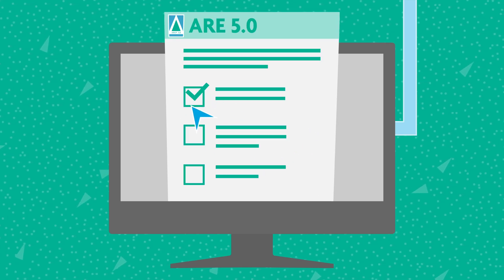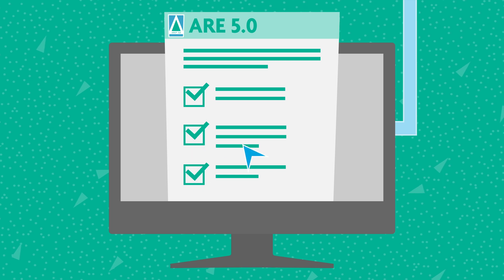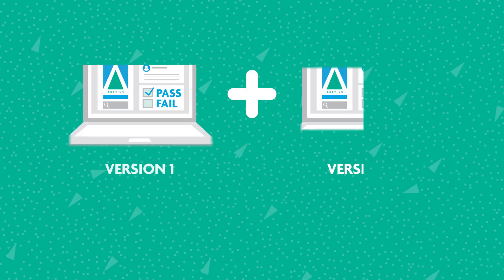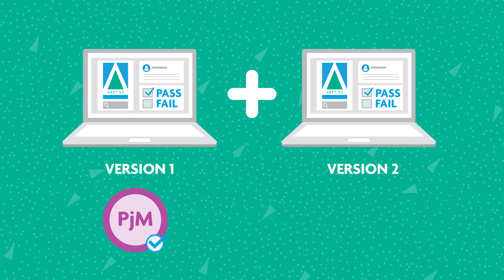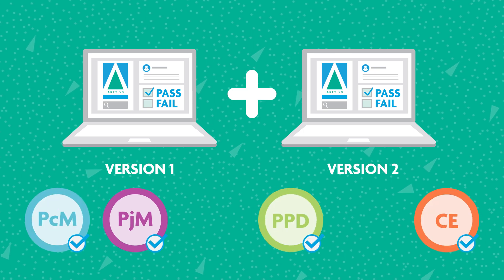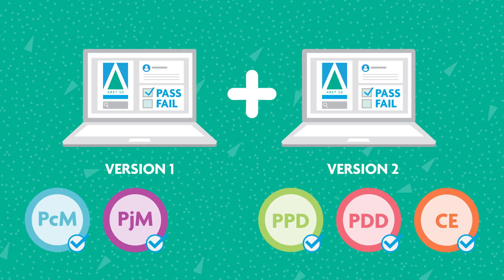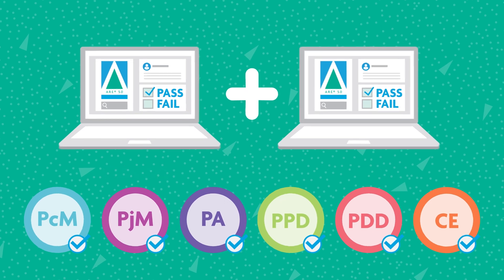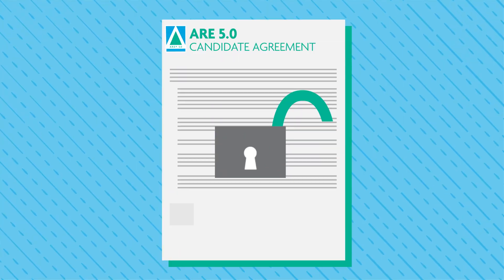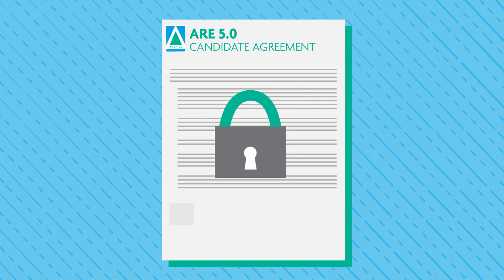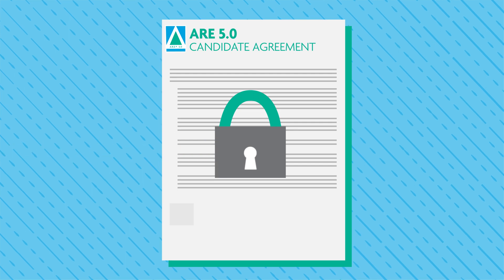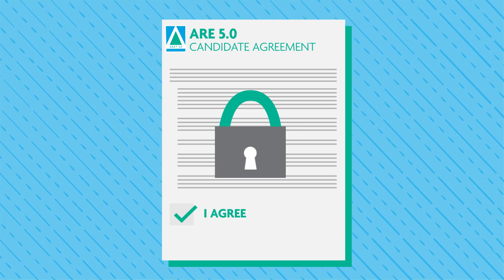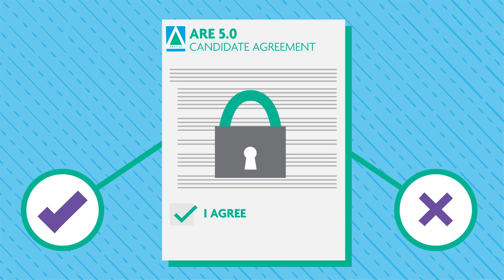As you make a plan to complete the A.R.E., there are a few important policies to keep in mind. Each divisional pass is valid as long as NCARB continues to deliver the version of the exam you took, as well as the next version. To maintain the exam's security, you'll also need to agree to NCARB's A.R.E. Candidate Agreement, which explains the type of content you can and can't share with others.